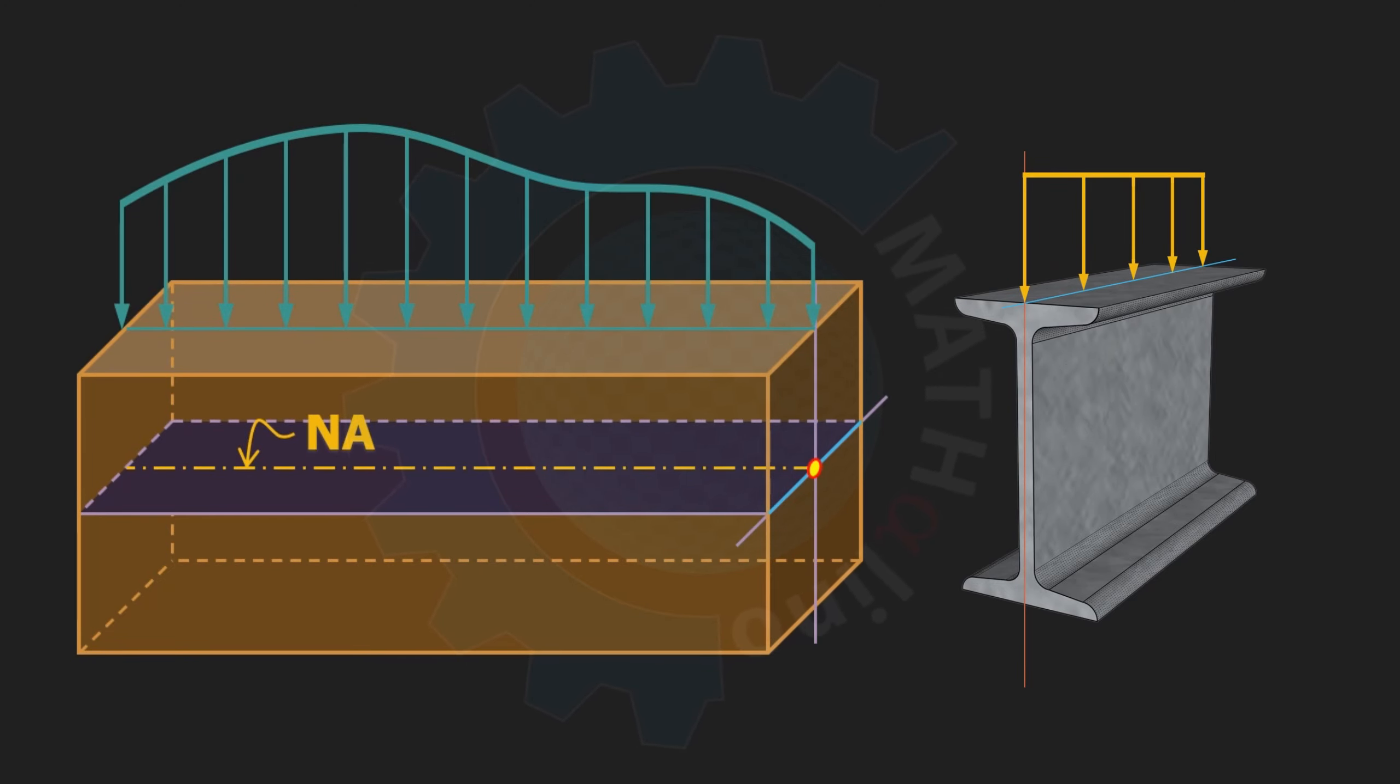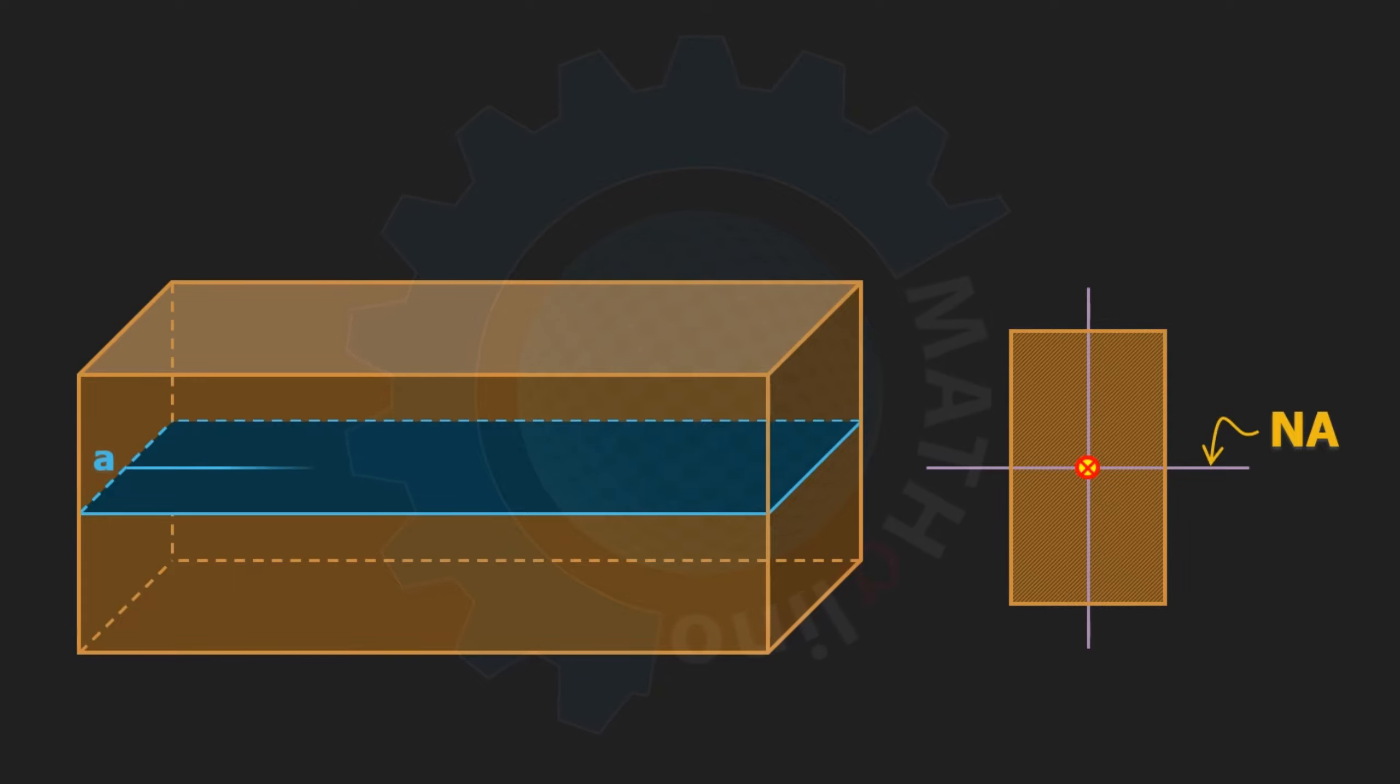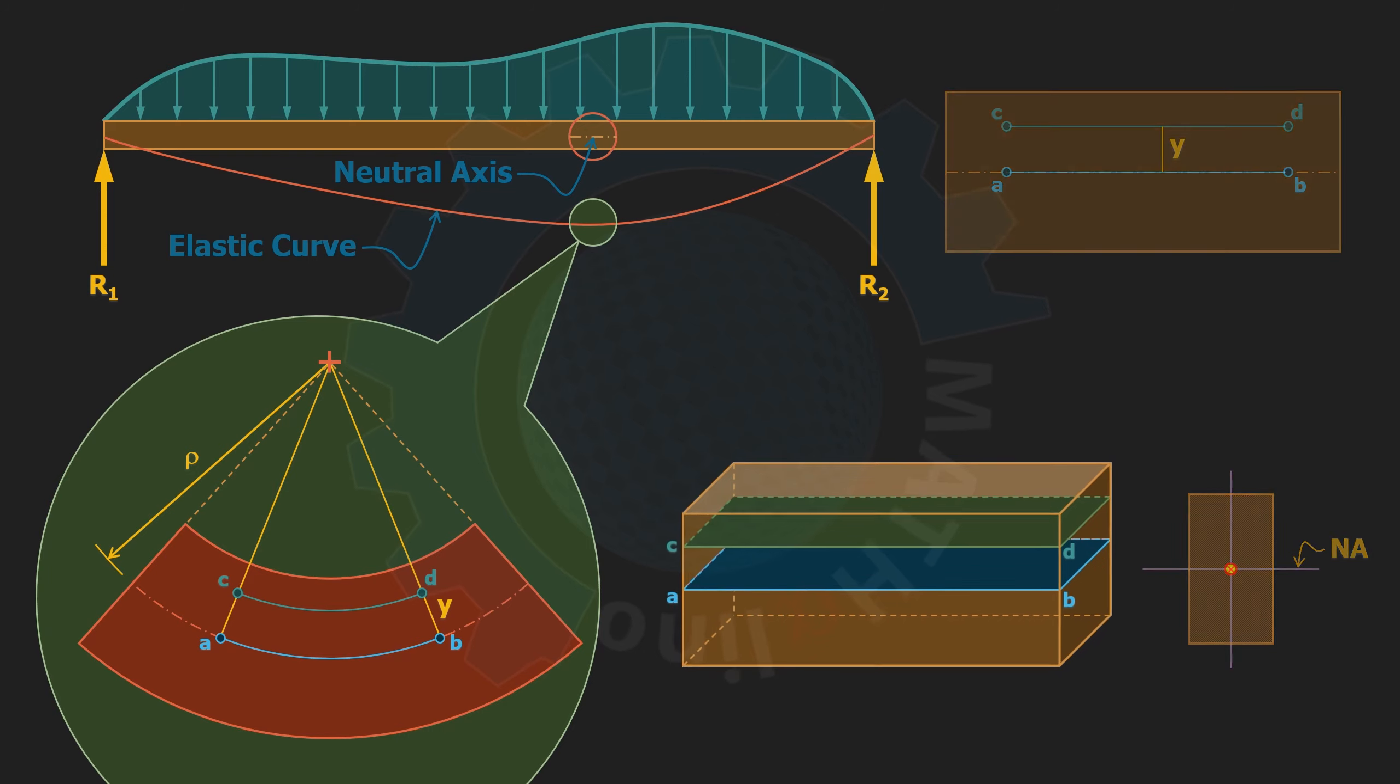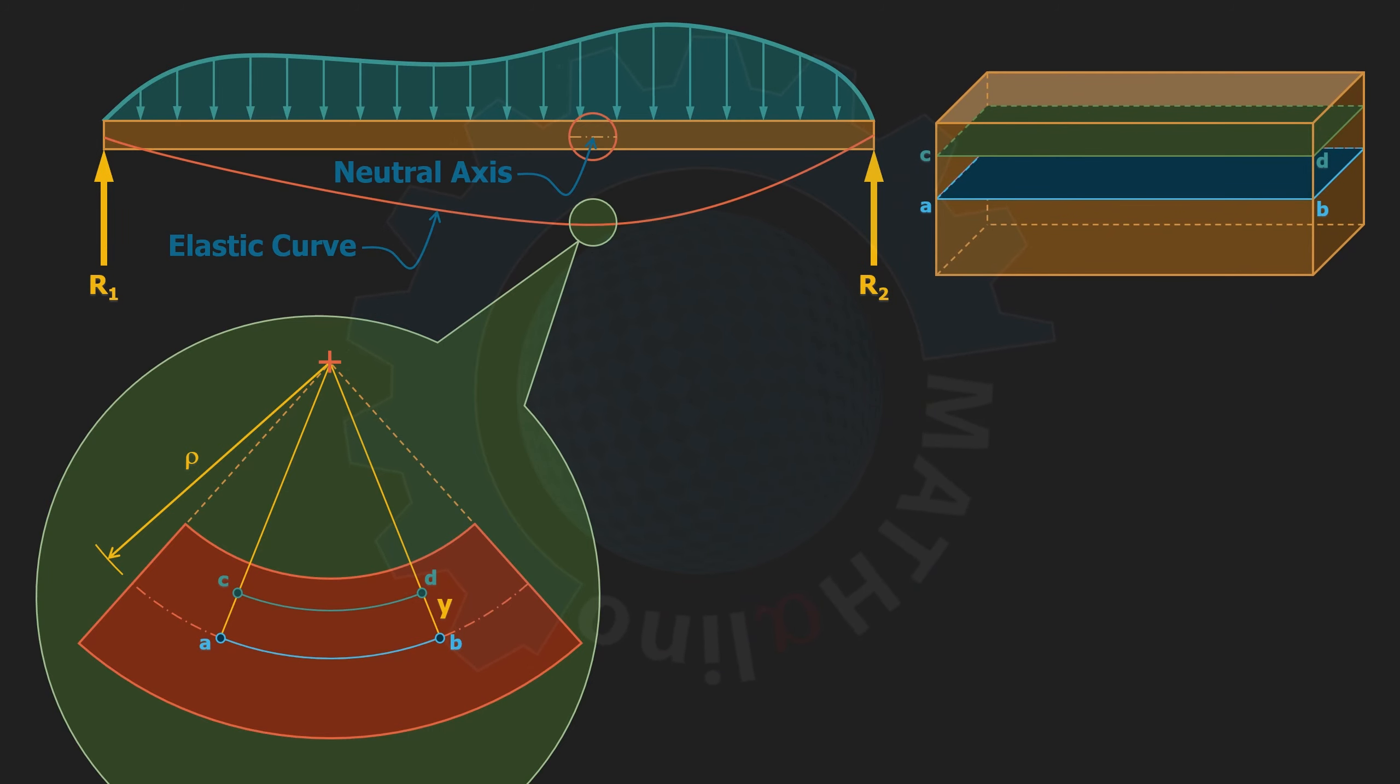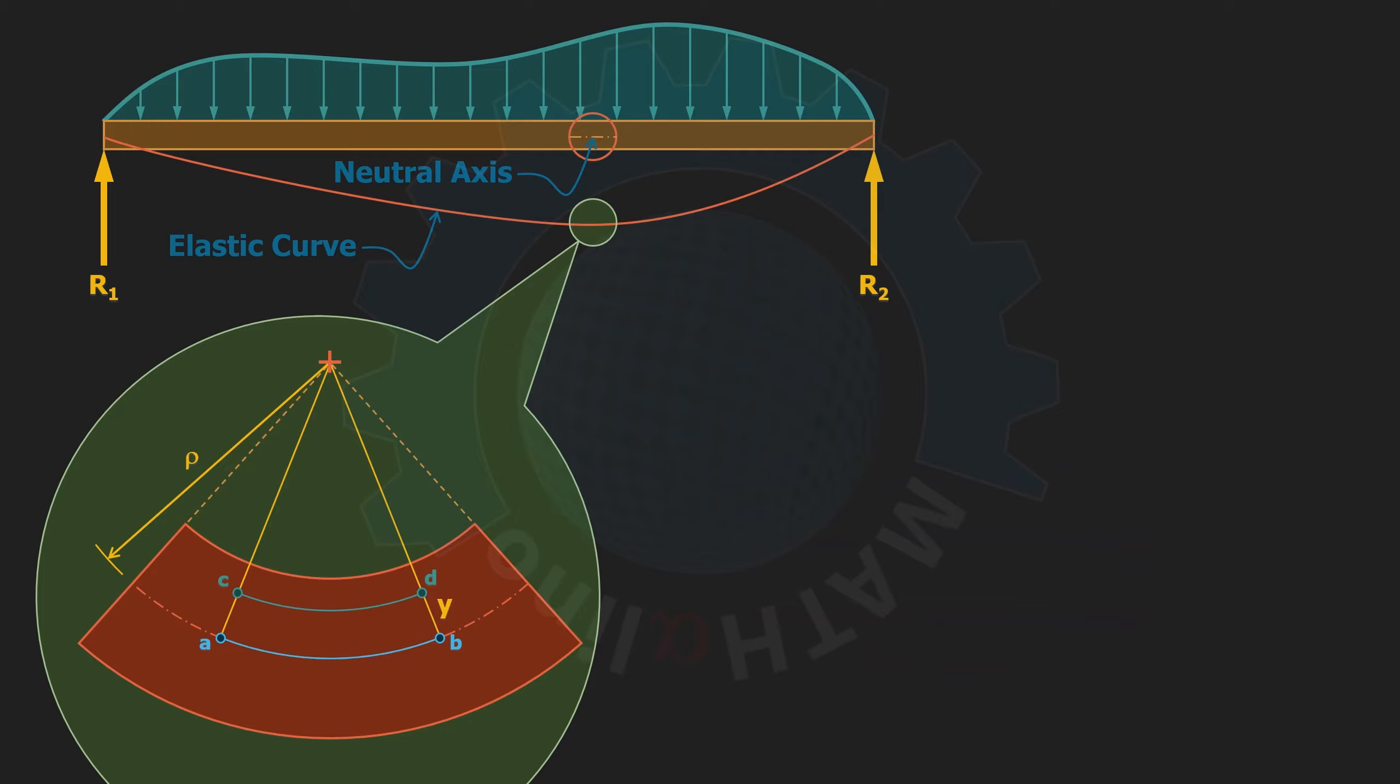And this is important because the principal axis contains the shear center of the section. We apply the load at this plane to prevent warping the section. Again, this is our fiber ab, and this is our fiber cd which is at distance y above ab. At the deformed state, this is ab and this is cd.